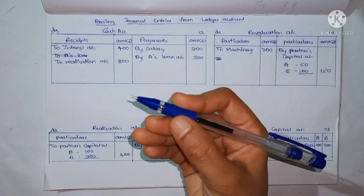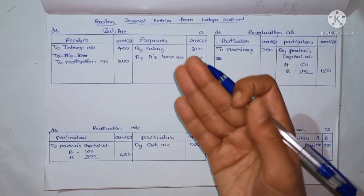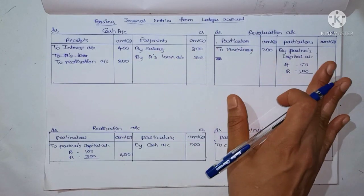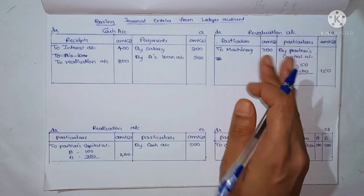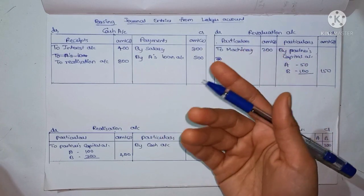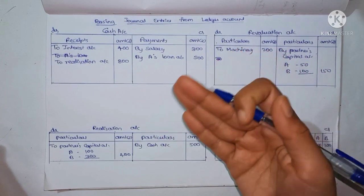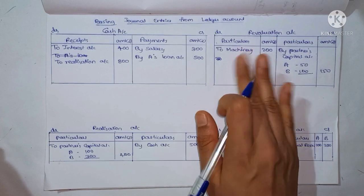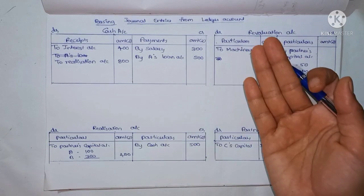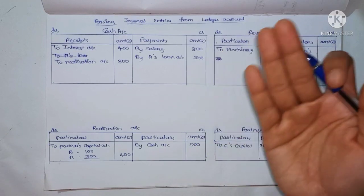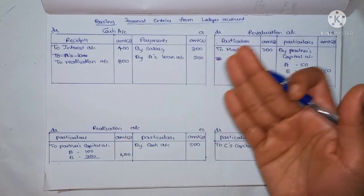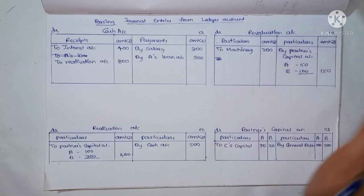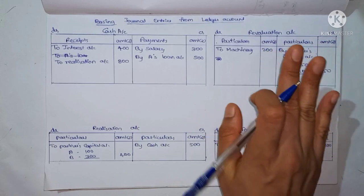For the first year, you have journal entries — for example, for admission, goodwill and treatment. You will close the realization account, the revaluation account, and the journal entries. This is the type of question you will encounter.